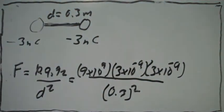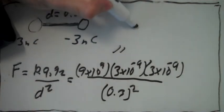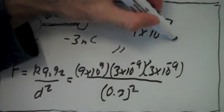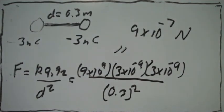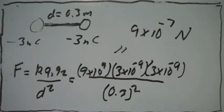If we plug this into a calculator, we find that the force between the two spheres is 9×10^-7 newtons, and now the force is repulsive.